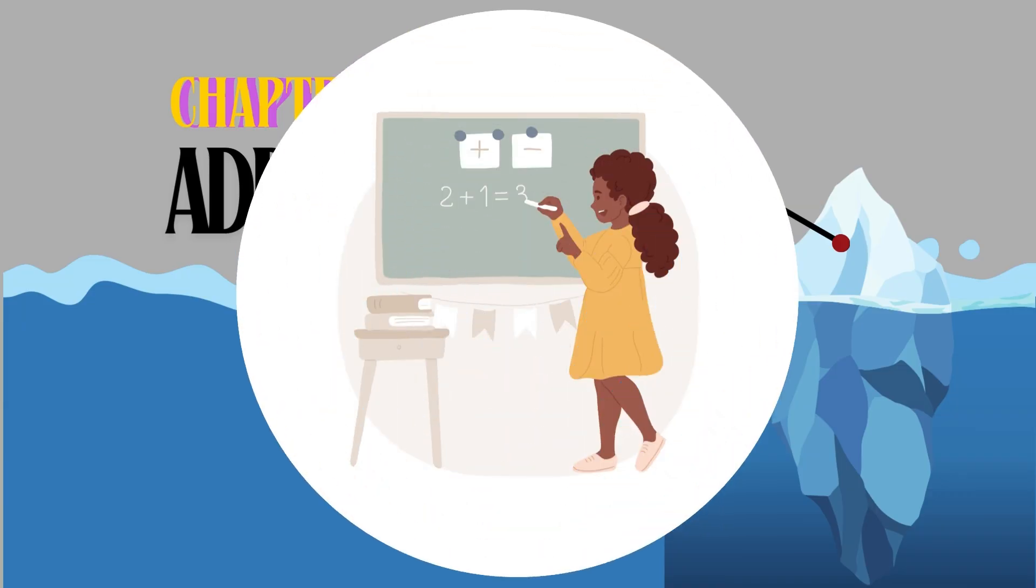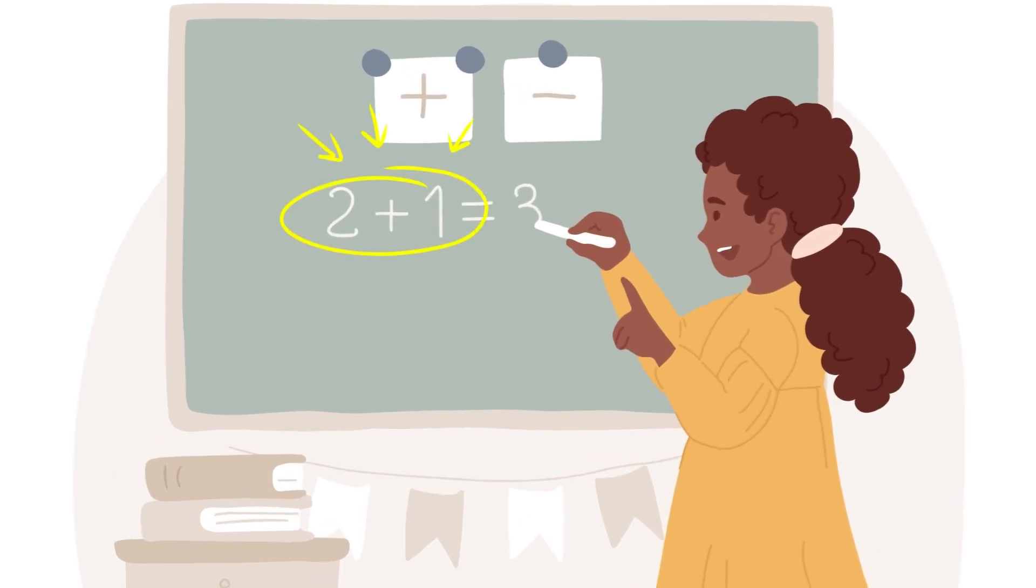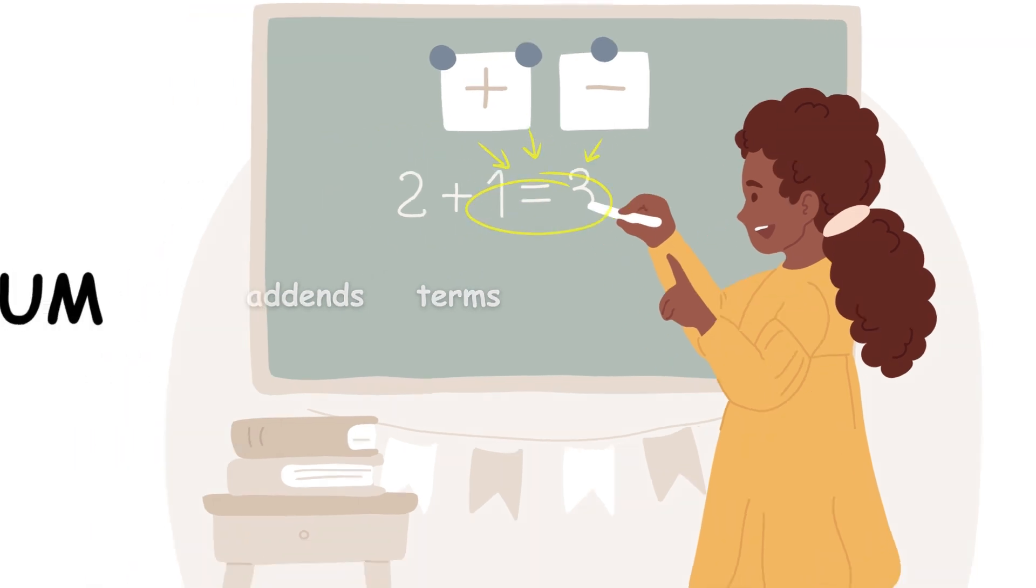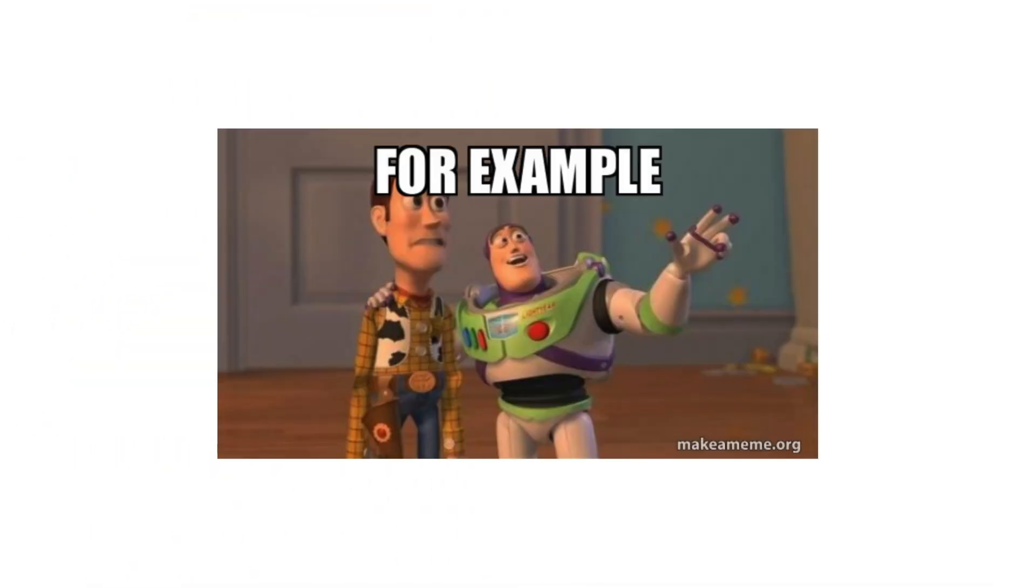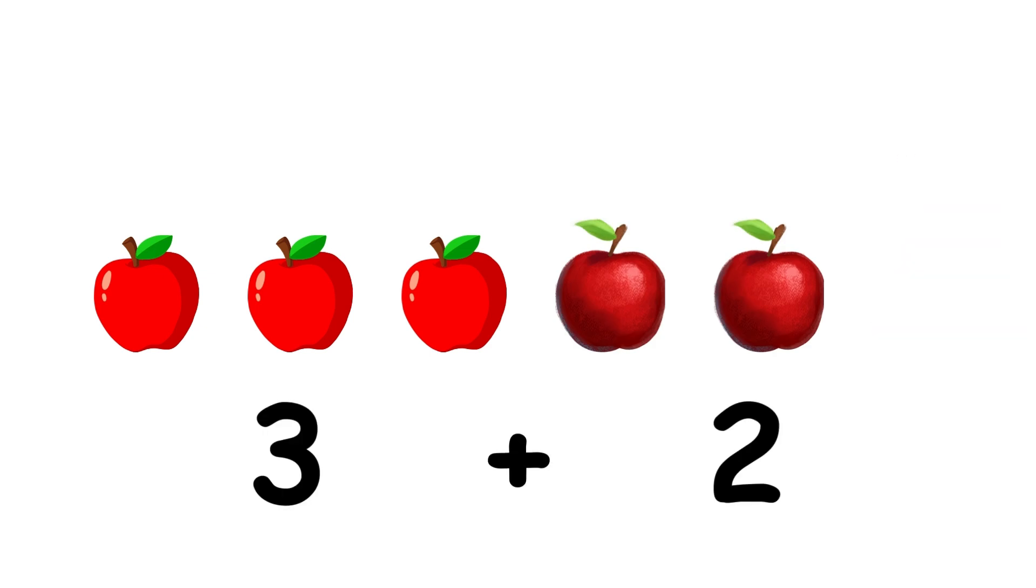Addition. Addition is a basic arithmetic operation involving the combination of two quantities, called addends or terms, into a result called a sum. For example, if you have three apples and you add two apples, you have five apples. Three plus two is five.